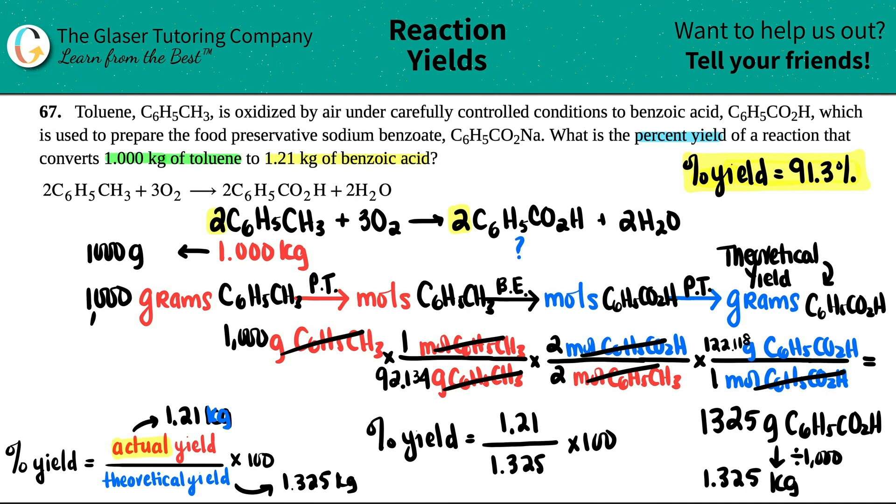So percent yield equals the actual yield, they actually got 1.21 kilograms, and the max should have been 1.325. So 1.21 divided by 1.325 times 100, looks like it's three sig figs to me, so 91.3%. Basically, whoever did this did a very good job because out of 100 total, think of it as like a grade, they got 91.3. They collected 91.3% of the product that they could have gotten out of 100. So that's pretty good. Alright guys, hopefully this helped. Let me know in the comments. Thank you so much for viewing the video. I hope I'm giving you good quality help. And yeah, let's keep studying hard. Good luck on your future tests and quizzes, and I will see you in the next lessons. Okay, have a great day. Bye-bye.